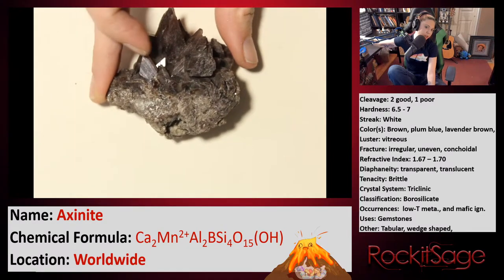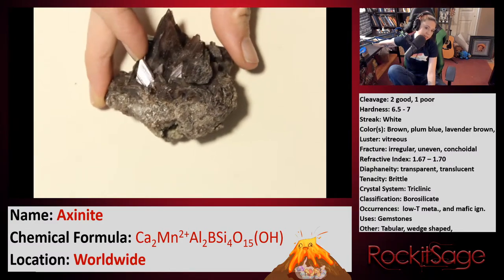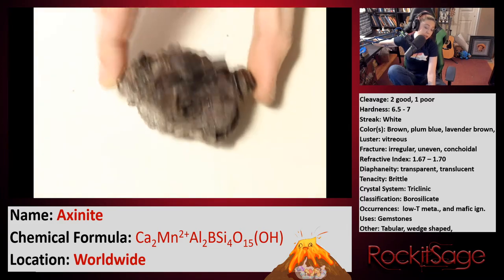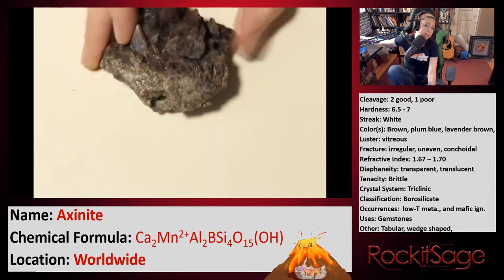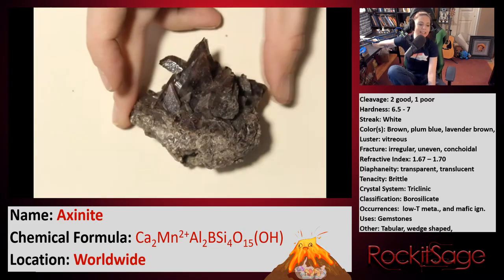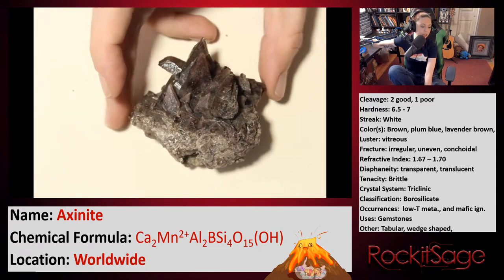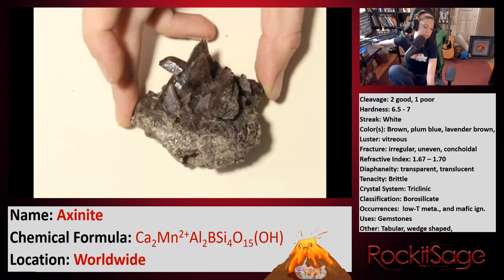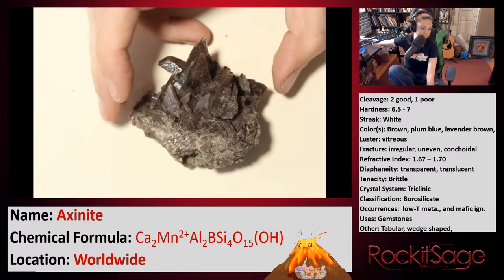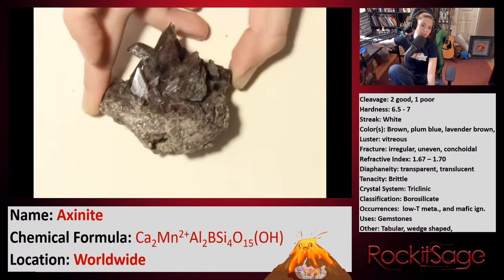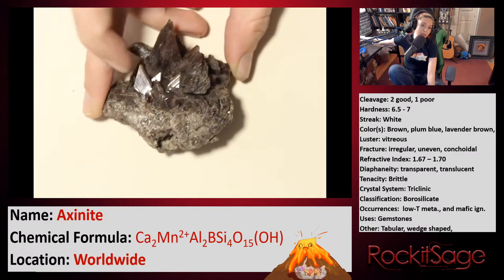You'll also notice that these individual crystals are relatively shiny, and you can even see striations on one of these blades here. They're considered bladed because of the shape — they're very, very thin, and they literally almost look like knife blades. That's actually where it gets its name from. Axina is the Greek word it got its name from — it means axe in Greek.